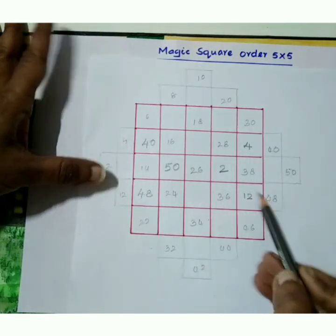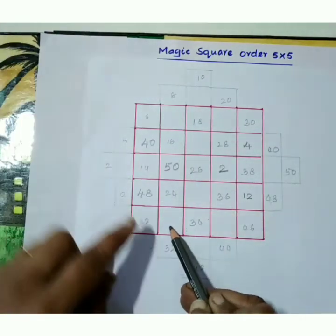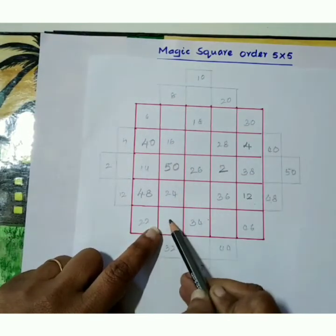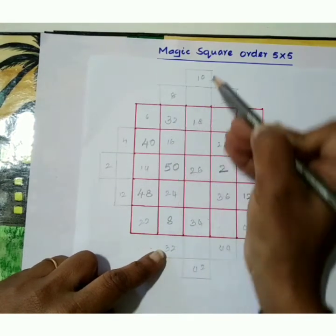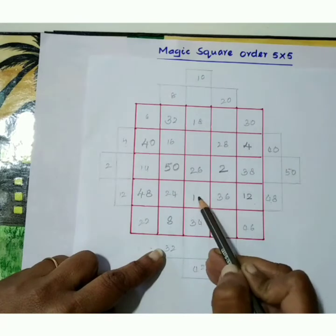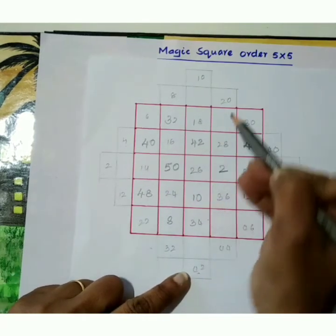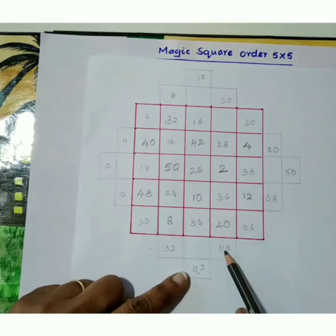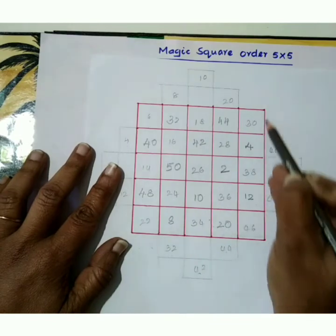Row end empty box is this one. So shift 8 to here and 38 to here. 10 comes to here. Similarly, 20 comes to here and 44 comes to here. Now all the boxes are filled.